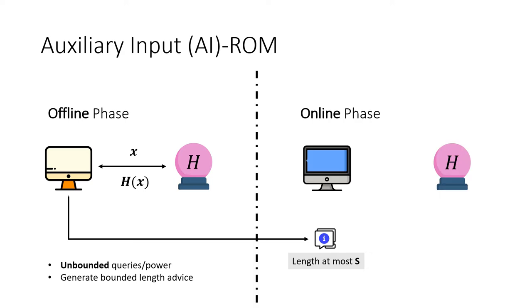Then, in the online phase, another algorithm tries to win a security game. It gets the advice from the offline phase and the challenge. Then, it makes at most t-queries and the goal is to output a valid answer.